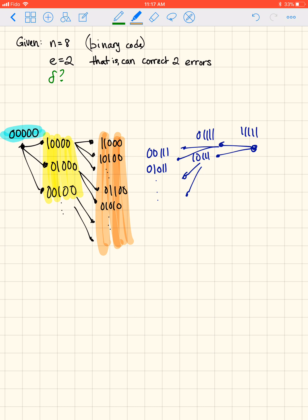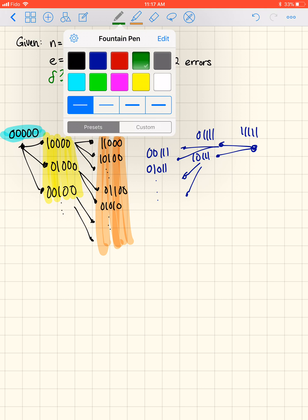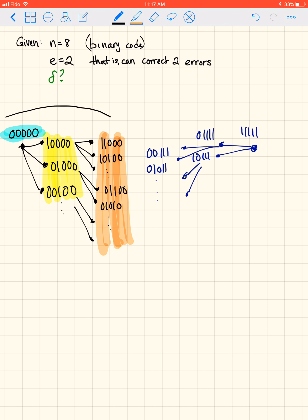So that's our 1 plus n plus n choose 2, which are in that kind of sphere around that code word, which are all the ones that we want to be able to correct to 0, 0, 0. And let's say, we don't know this, but let's say that 1, 1, 1, 1, 1, the 5 ones was also in the code.